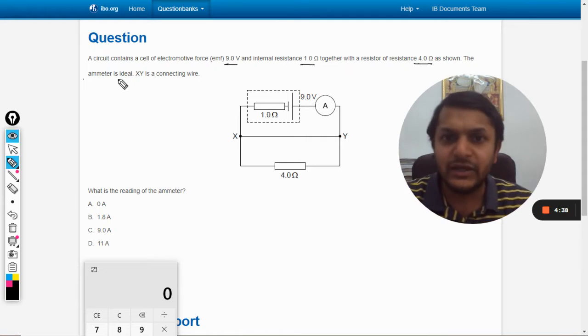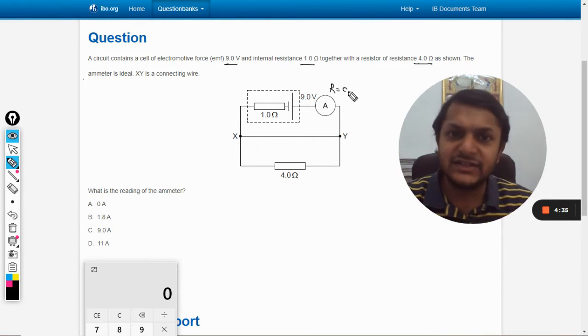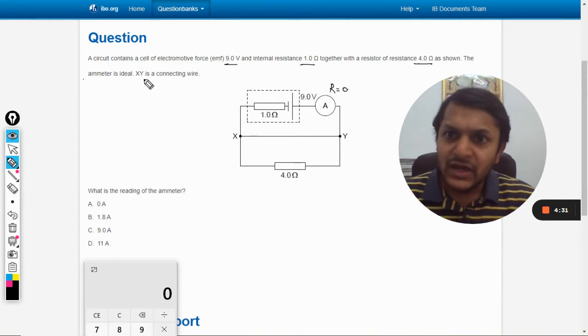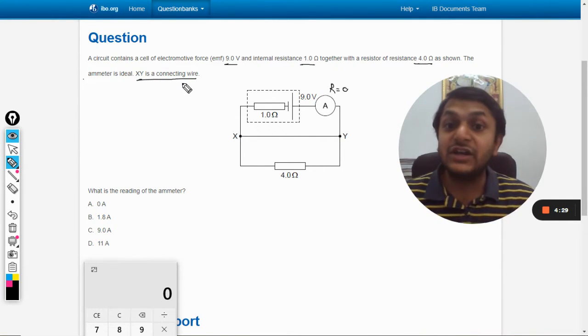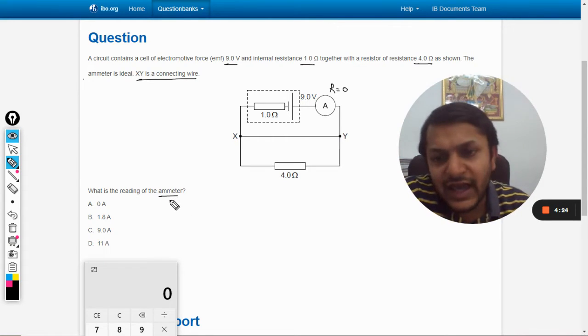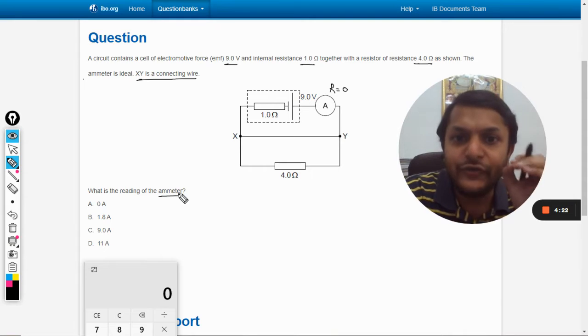Although it is applied in series in the circuit, it does not supply resistance to the circuit. So XY is a connecting wire which does not have any resistance, as is evident from the diagram. What is the reading of the ammeter? It means you need to find the total current.